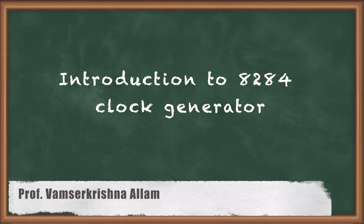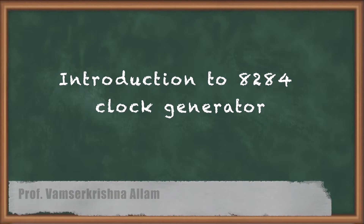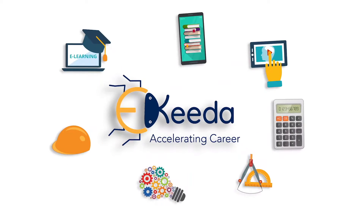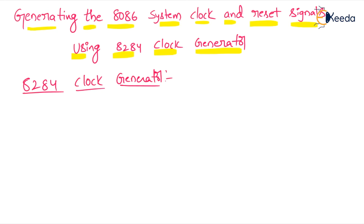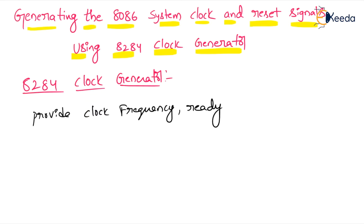Hi dear students. Today we will discuss about generating the 8086 system clock and reset signals using the 8284 clock generator. The 8284 clock generator is an IC developed by Intel to provide clock frequency, ready, and reset signals to the 8086 and 8088 microprocessors.